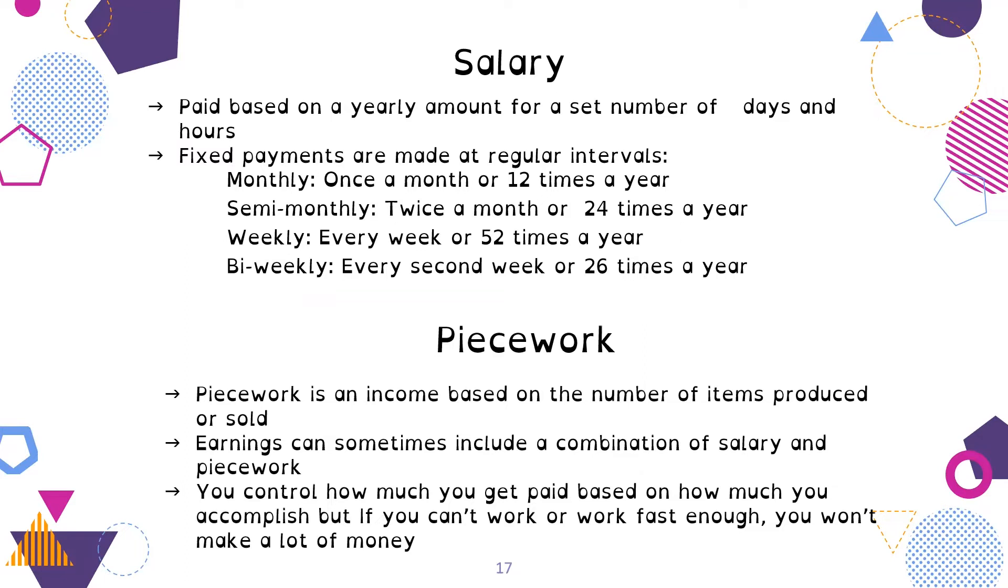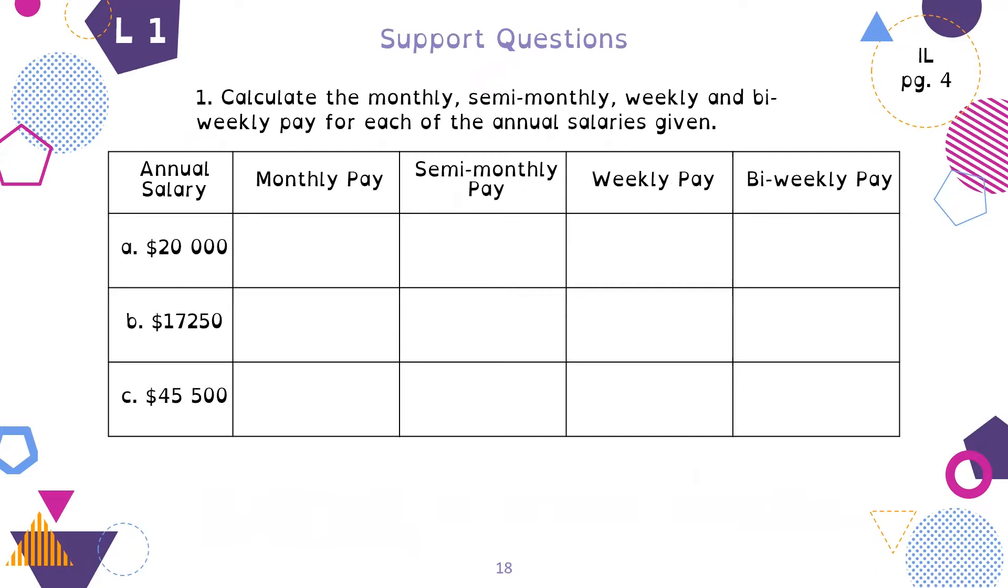Then we talked about piecework, which is when your income is based on the number of items produced or sold. Earnings can sometimes include a combination of salary and piecework. You control how much you get paid based on how much you accomplish. But if you can't work or work fast enough, you won't make a lot of money.